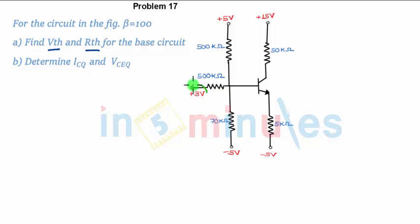For example, you can see here it is plus 3 volts, here it is plus 5 volts, here it is minus 5 volts, plus 15 volts, minus 5 volts. All the supply voltages are different from what we have usually seen.